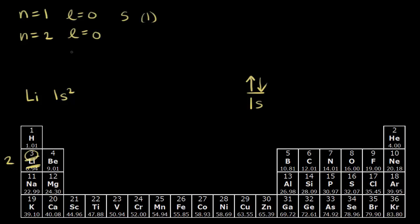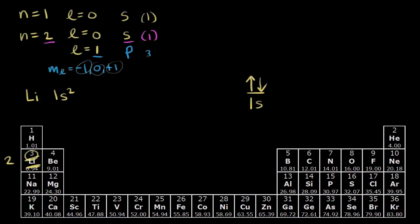What are the allowed values for l? l could be zero or one. When l is equal to zero, we're talking about an s orbital — so in the second shell, in the second energy level, we also have one s orbital. When l is equal to one, that's a p orbital. The allowed values for ml would be negative one, zero, and positive one — three possible values means three p orbitals in the second energy level.